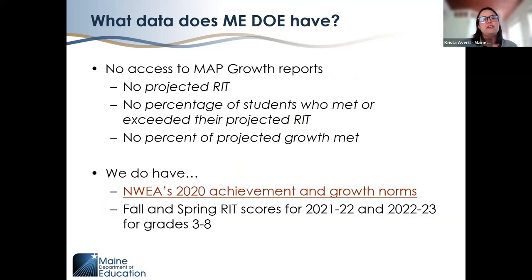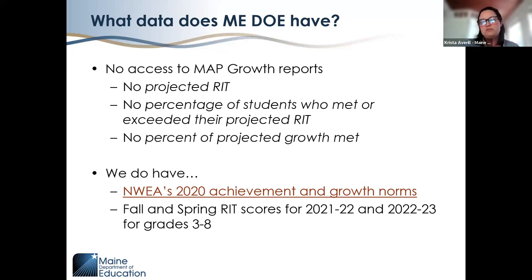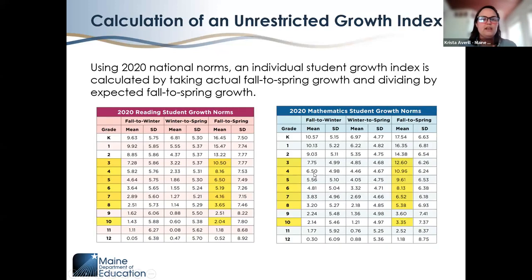Before getting into calculations, I want to clarify what data the State Department of Education has. Maine DOE doesn't have access to MAP Growth reports, so we can't use data like projected RIT, percentage who met or exceeded projected RIT, or percent of projected growth met. But we do have NWEA's 2020 achievement and growth norms posted publicly, and we have fall and spring RIT scores for Maine students from 2021-22 and 2022-23 for grades three through eight.